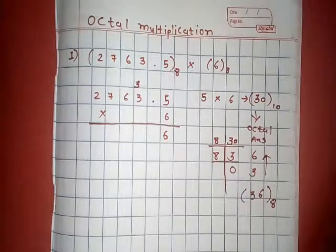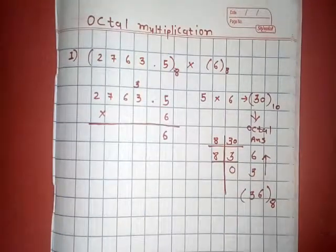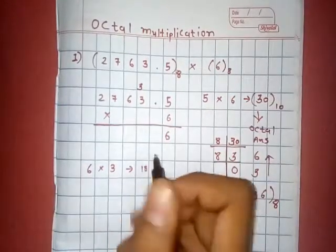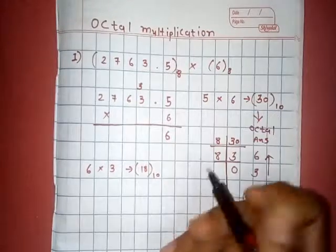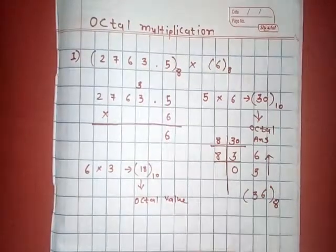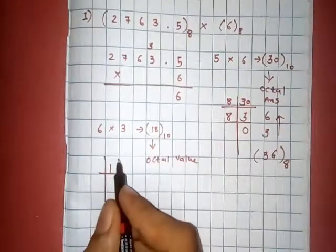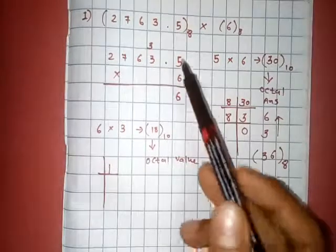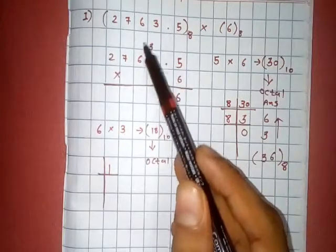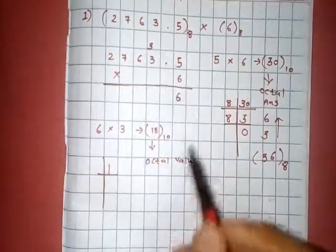OK now 6 times 3 is 18, 6 times 3 is 18 but that is for decimal. So now we must convert this decimal value into an octal value. So we use the same method. We must add this also here and that is 18 plus 3, this carry must be added to that value, and this is 18 plus 3 that is 21.